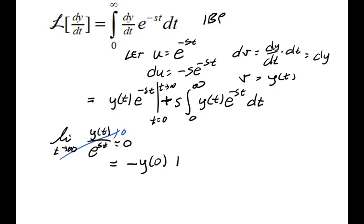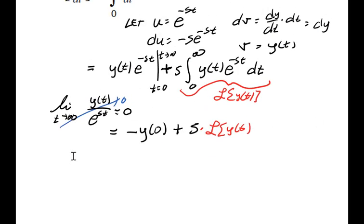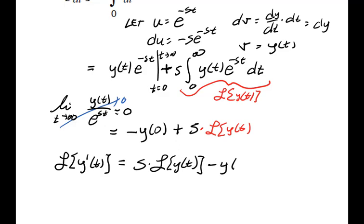So if I plug in 0, I get y of 0, e to the 0 is 1, and then plus s times, well, if we notice this integral that we got after our integration by parts, well, this integral is actually the Laplace transform of y of t by definition. So this is s times the Laplace transform of y of t. So as a result, we know that the Laplace transform of y prime of t is equal to s times the Laplace transform of y of t minus y evaluated at 0.